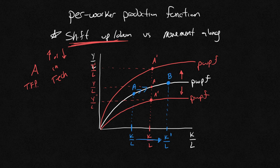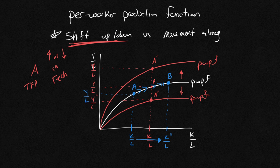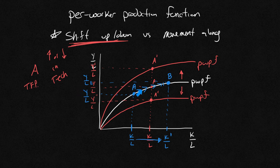So yes, my output per worker goes up. Let's call this Y over L. Let's call this Y over LB for the point B. And so we do see an increase, but it's a movement along.